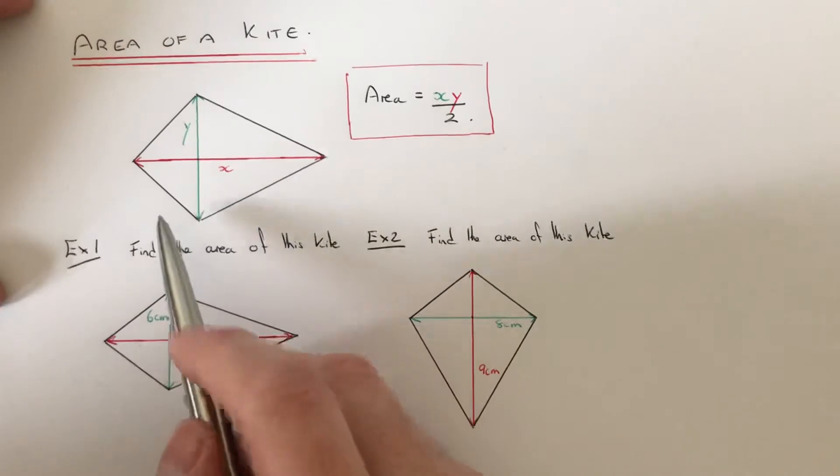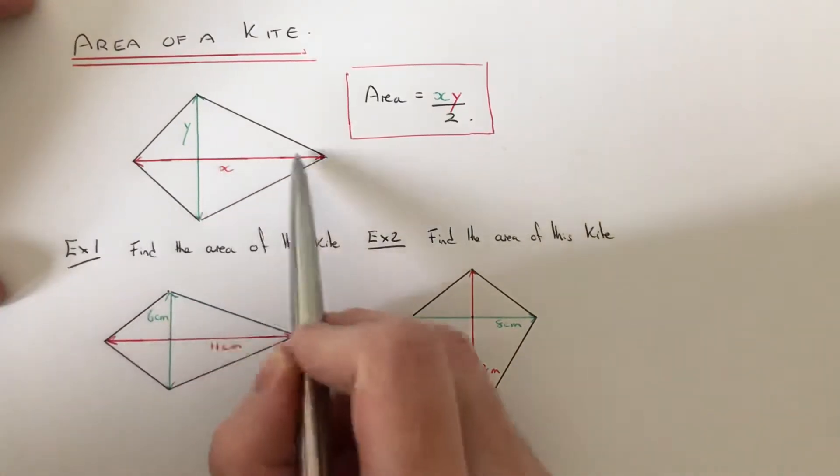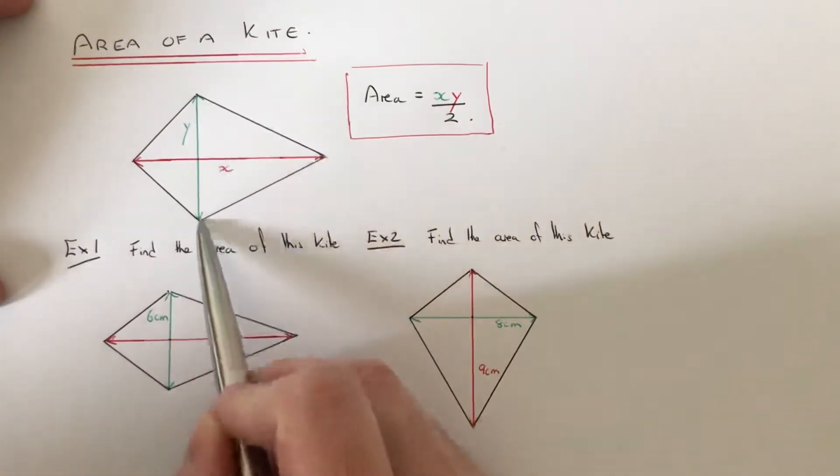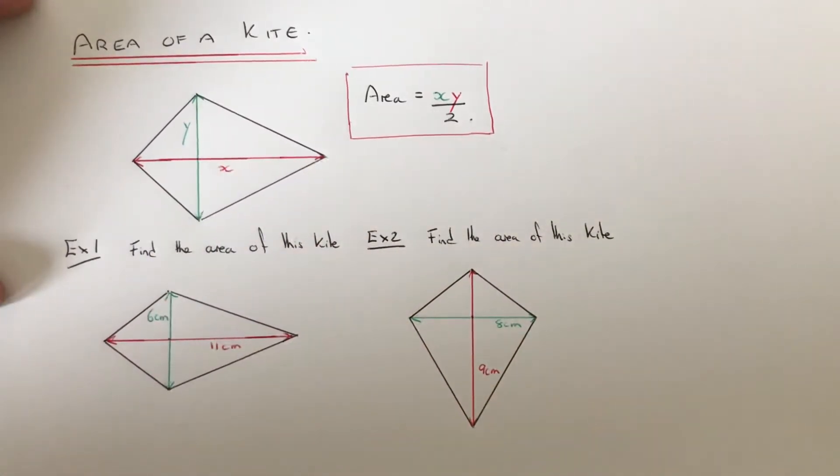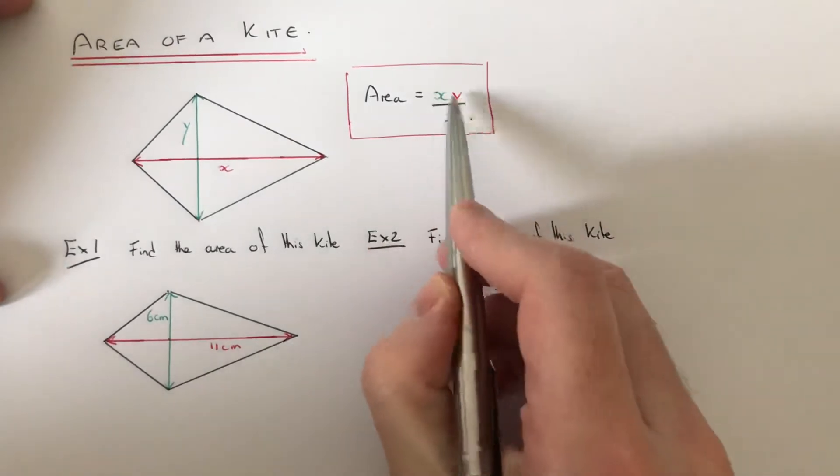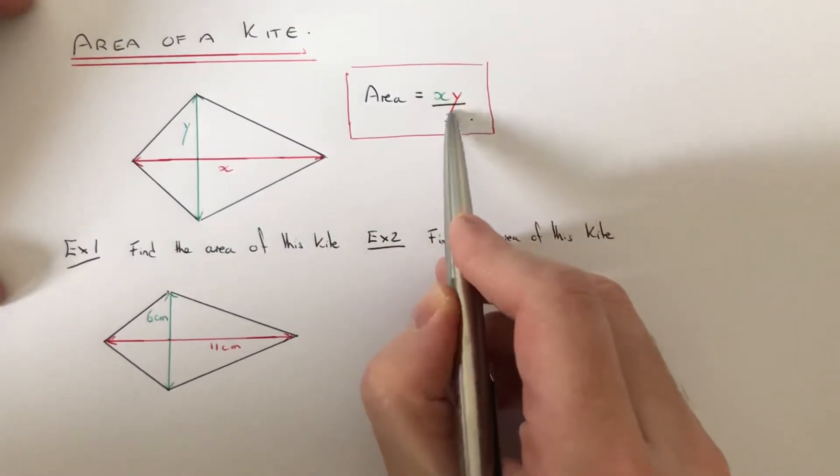To do this, you will need to know the length of the two diagonals of the kite. The diagonals go from corner to corner. You just need to multiply these two lengths together and then divide the answer by 2.